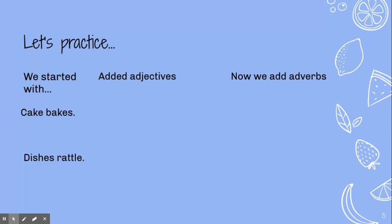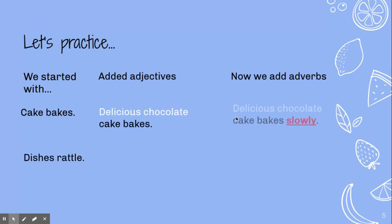Let's try some other ones. We said 'cake bakes,' and yesterday we decided it was a delicious chocolate cake. Now let's add some adverbs: 'delicious chocolate cake bakes slowly.' Oh, it's so hard waiting, isn't it?